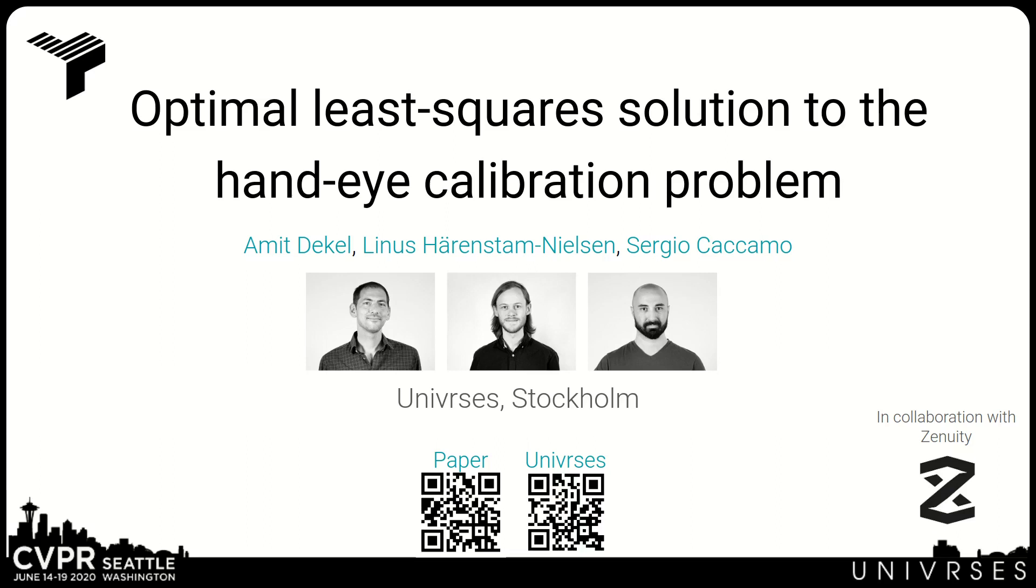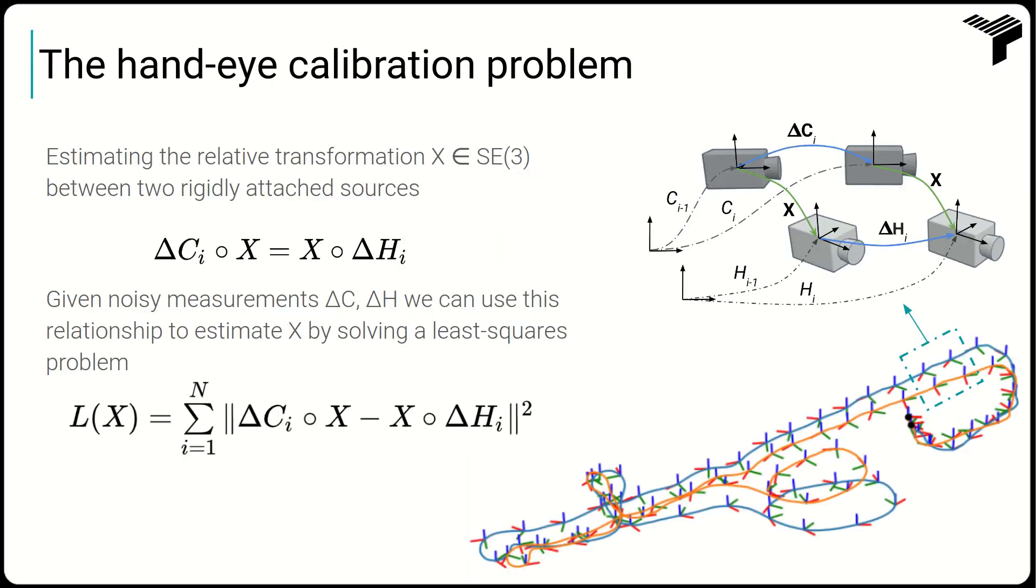In this work, we present an optimal solution to the hand-eye calibration problem, where one would like to find rigid transformation between two sources given their relative poses.